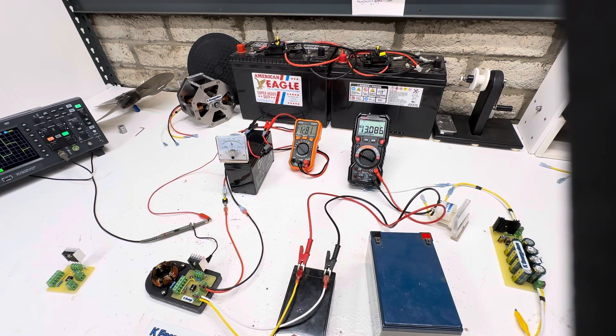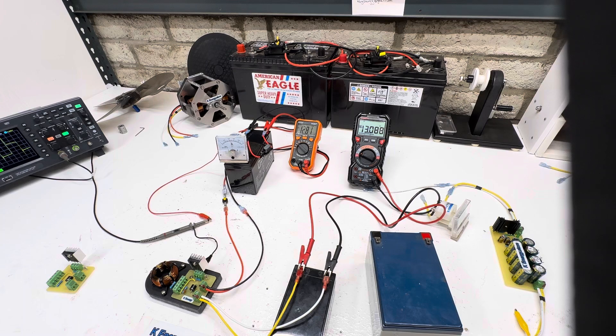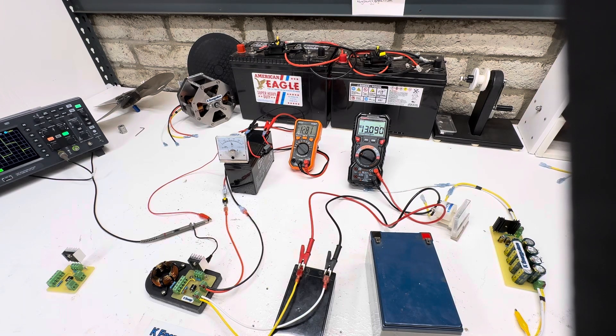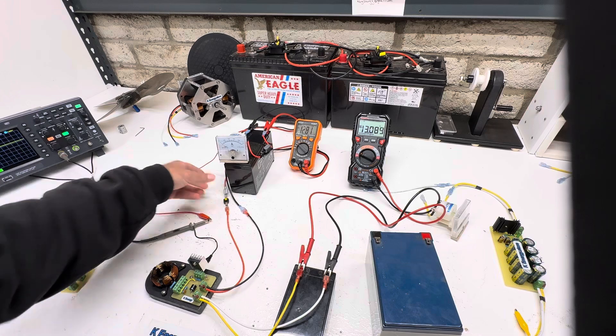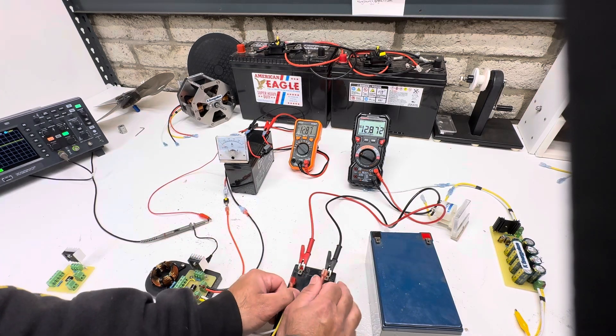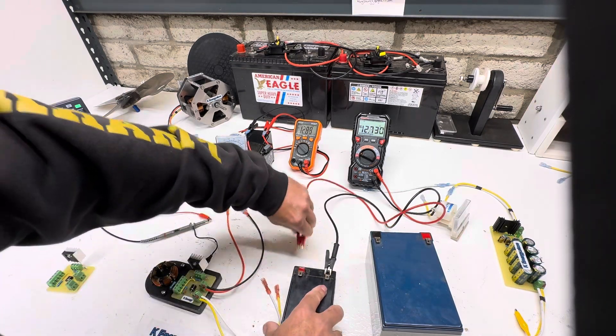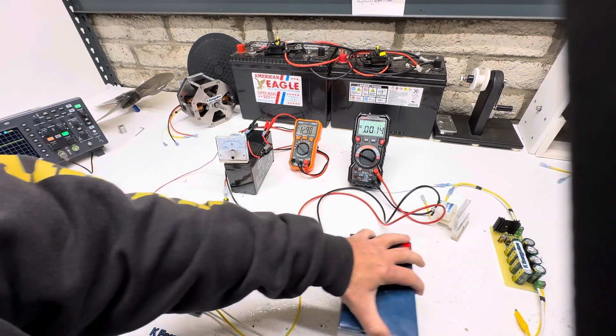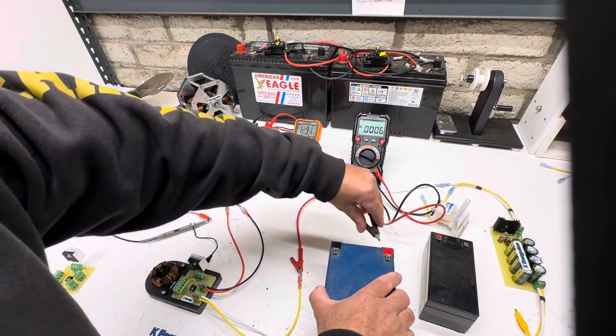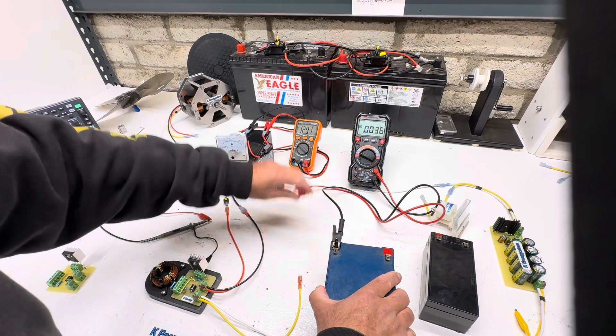You can see that charges pretty quick. What we're going to do now is turn this off and we're going to hook this up to a bigger battery. This battery, this is a 12 amp hour.